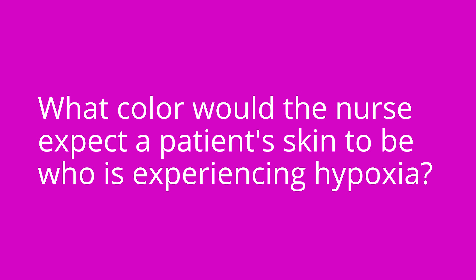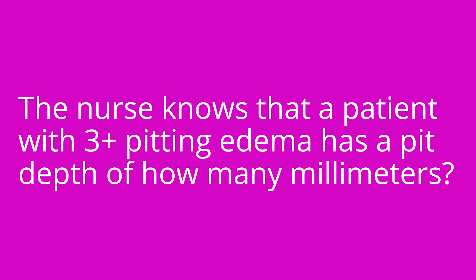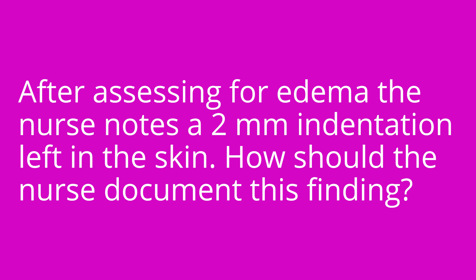Here are some quiz questions to test your knowledge. What color would the nurse expect a patient's skin to be if experiencing hypoxia? We would expect to see cyanotic skin, or blue discoloration. A patient experiencing cirrhosis of the liver presents with yellow discoloration of the skin — how should the nurse document this finding? This would be documented as jaundice. The nurse knows that a patient with three plus pitting edema has a pit depth of how many millimeters? Six millimeters. After assessing for edema, the nurse notes a two-millimeter indentation left in the skin — how should the nurse document this finding? That's one plus pitting edema.